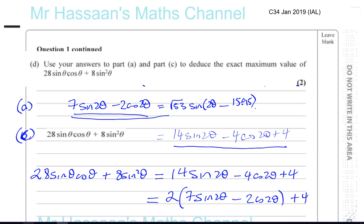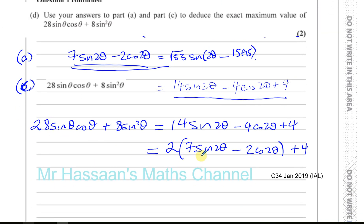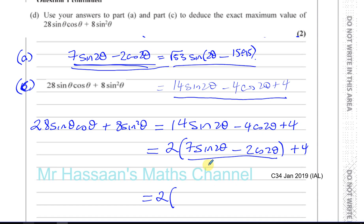Taking out 2 from those two terms gives 2(7 sine 2θ minus 2 cosine 2θ) plus 4. This makes the bracket exactly the same as the expression from Part A, since 2 times (7 sine 2θ minus 2 cosine 2θ) equals root 53 sine(2θ minus 15.95°). So I can replace 7 sine 2θ minus 2 cosine 2θ with that result, giving 2 times root 53 sine(2θ minus 15.95°).